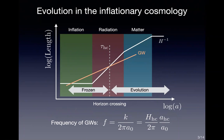This picture shows a rough sketch of the evolution of gravitational wave modes in inflationary cosmology. The y-axis is the log of the length scale and the x-axis is the log of the scale factor. The white line describes the evolution of the horizon scale, and the orange line shows the evolution of the wavelength of a gravitational wave mode. The gravitational wave is produced during inflation, crosses the horizon, and then at some later time after inflation it re-enters the horizon — we call this the horizon crossing time.